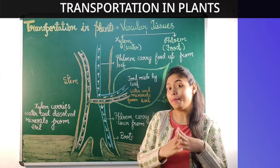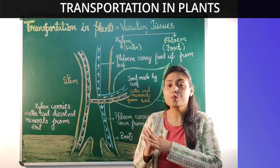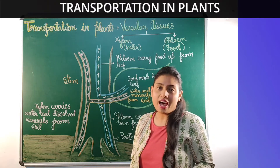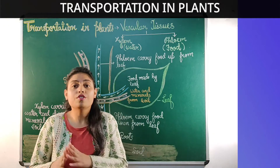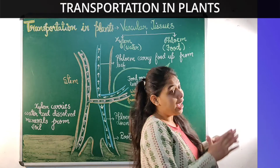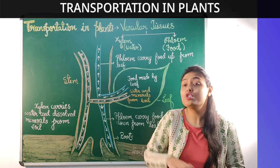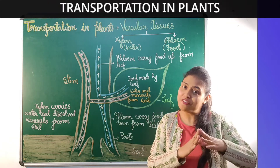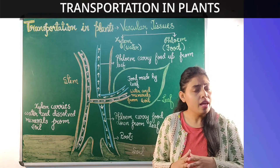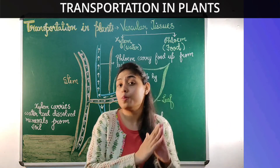Good morning students and welcome back to my class. Today we are going to study about transportation in plants. We know that in human beings the transportation of digested food, water, waste and gases takes place through blood. But when it comes to plants, plants do not have blood. Then how does water and food get transported in plants?